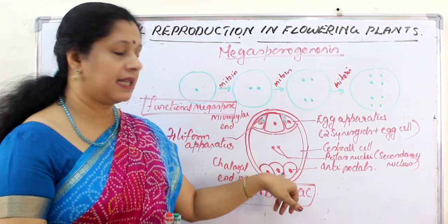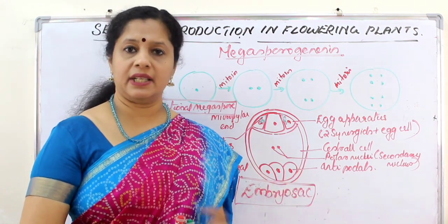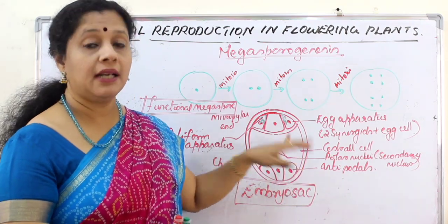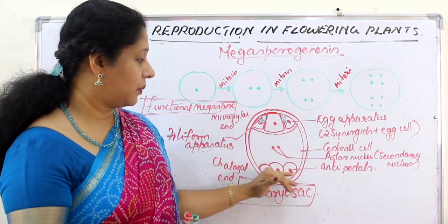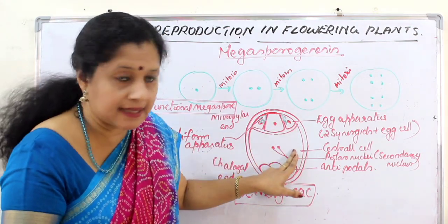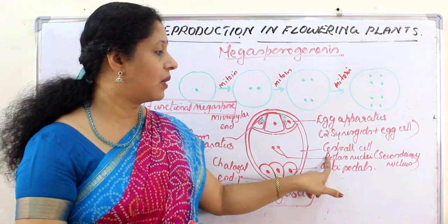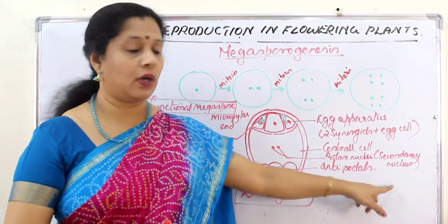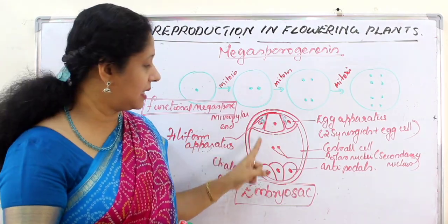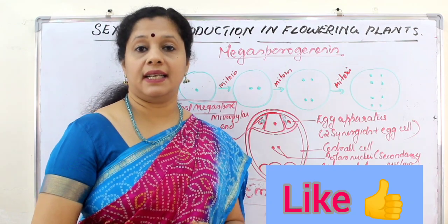At the chalazal end there are three cells collectively called antipodal cells — after fertilization they degenerate. The central cell has two nuclei called polar nuclei or secondary nuclei. During fertilization, the female gamete (egg cell) and the polar nuclei will both be involved — we will study that in detail later.